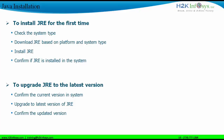For installing Java for the first time on your machine, first we need to check the system type, then download Java — that is, JRE — based on the platform and system type, then install JRE and confirm if JRE is installed in the system.